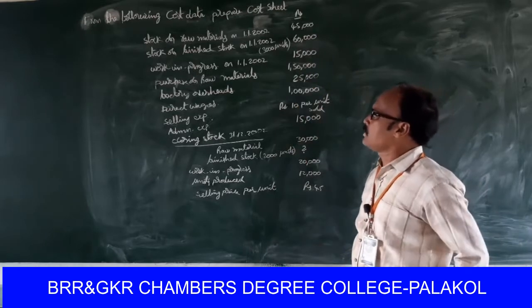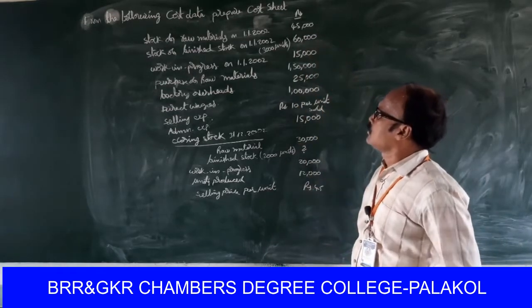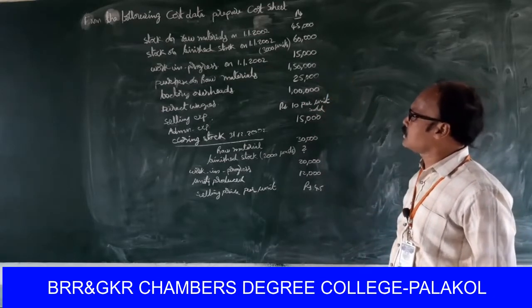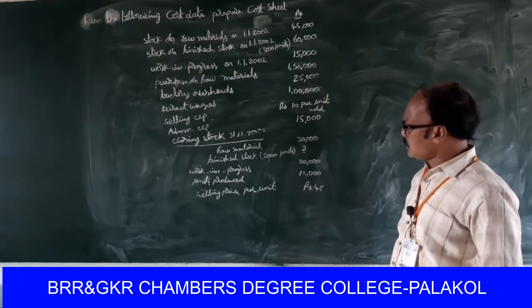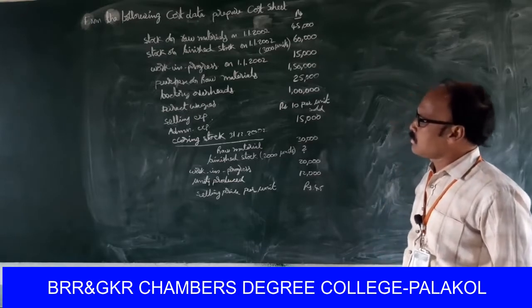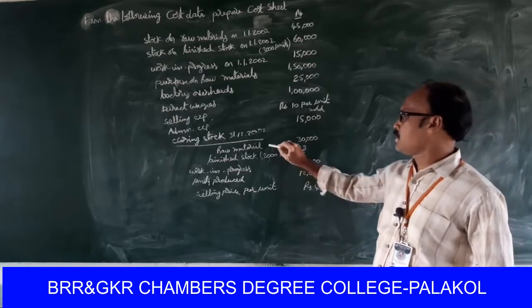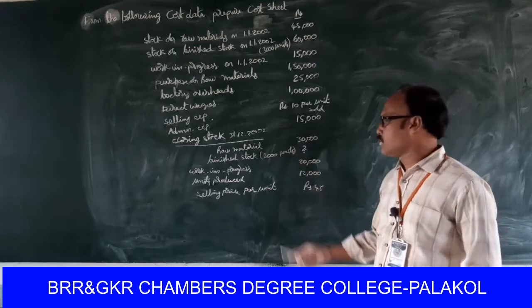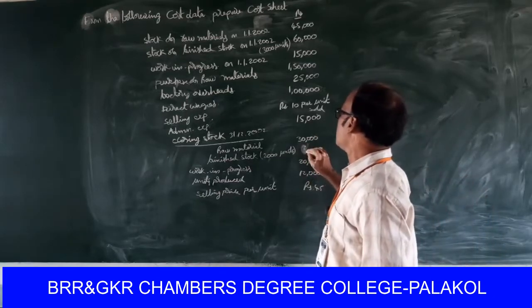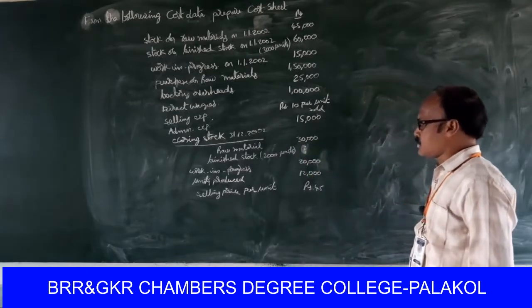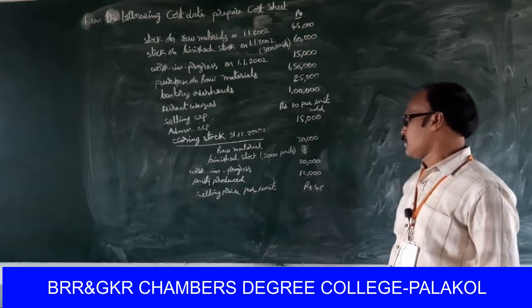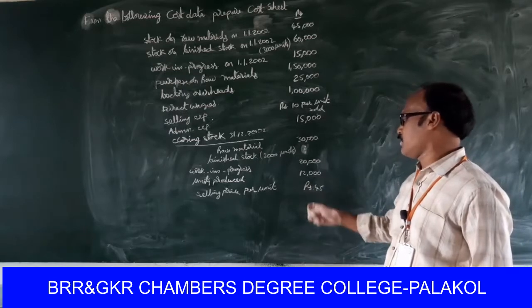The data given: stock of raw materials (opening), finished stock as on 1/1/2002, work in progress opening value, purchase of materials one lakh fifty thousand, factory overheads twenty-five thousand, direct wages one lakh, selling expenses ten rupees per unit sold, administrative expenses fifteen thousand, closing stock of raw materials thirty thousand, finished stock closing two thousand units (value unknown), work in progress closing twenty thousand, units produced twelve thousand, selling price per unit forty-five rupees.